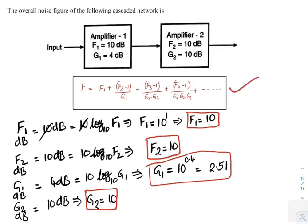The overall noise factor F equals F1 plus (F2 minus 1) by gain of first amplifier. That is 10 plus (10 minus 1) divided by G1 equals 2.51. That is equal to 13.58.